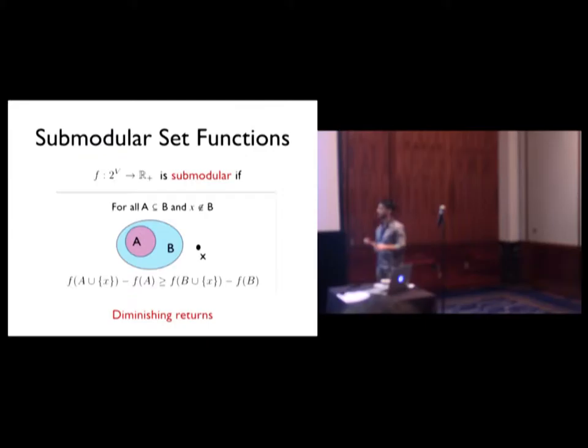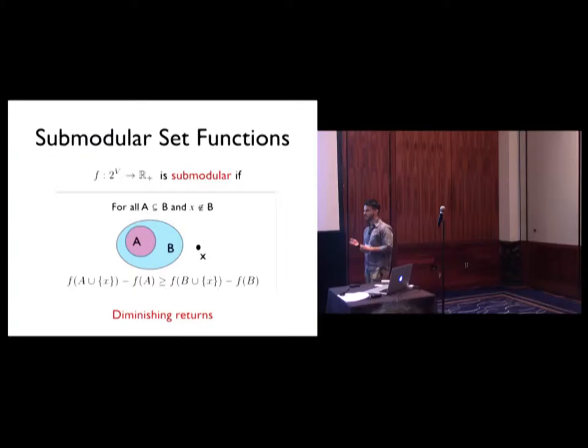So I'd like to first start by defining what's submodularity. I'm assuming most people here know, but it's a property of set functions. There are a few equivalent ways of defining such functions. Perhaps the most intuitive one is through the notion of diminishing returns, which is as we grow our set, the gain of adding an actual element can only decrease. So in other words, if we have sets A and B, A containing B, the gain of adding an element X to A must be at least the gain of adding the same element X to B.